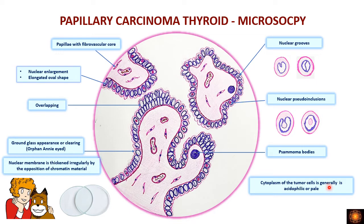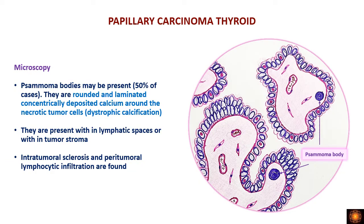Additionally, psammoma bodies can be found, and the cytoplasm of tumor cells is pale or eosinophilic. Psammoma bodies are calcium depositions arranged concentrically around a necrotic tumor cell — a form of dystrophic calcification, with the necrotic tumor cell as the central nidus surrounded by concentric calcium layers. Psammoma bodies are seen in lymphatic spaces or in the stroma of the papillae.